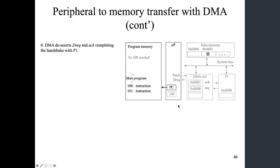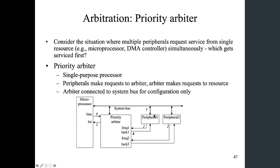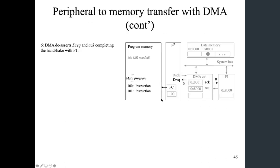So once the data copying is done, it will de-assert the DMA request and also acknowledge the handshake with P1 to say, okay, I'm done with the copying, to tell P1 that all the data you have have been copied. And also to tell the microprocessor that, hey, I'm done using your system bus and you are free to take it back. And you are free to take the bus back, which the microprocessor will be happy to do. And then we go back to the normal operation.